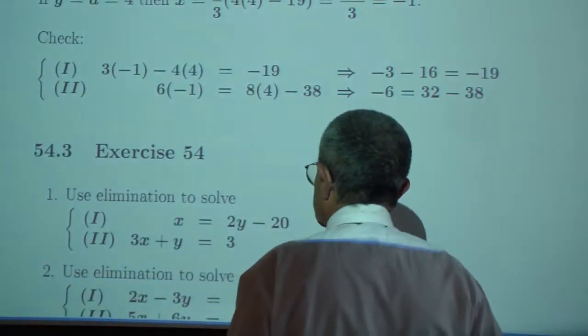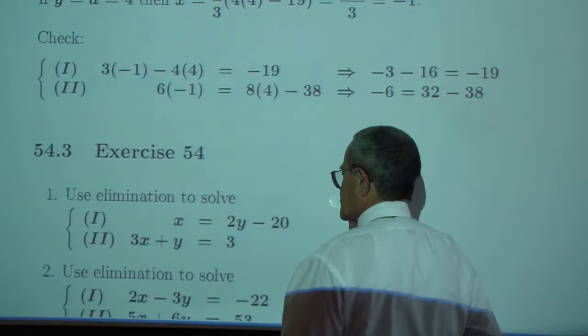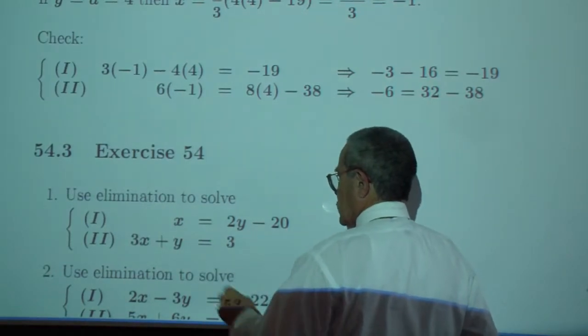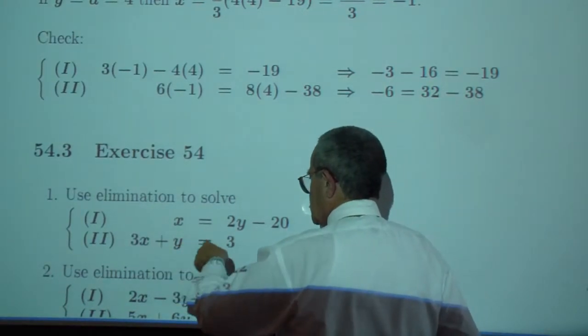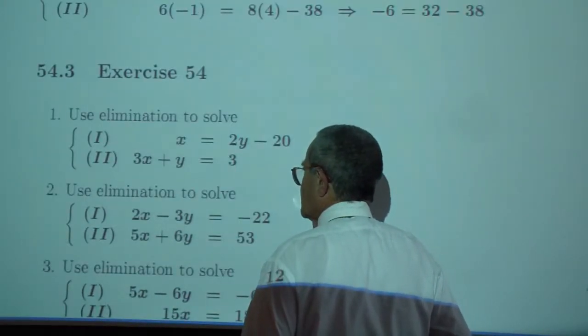Exercise 1. Use elimination to solve x, which is 2y minus 20. 3x plus y is 3.